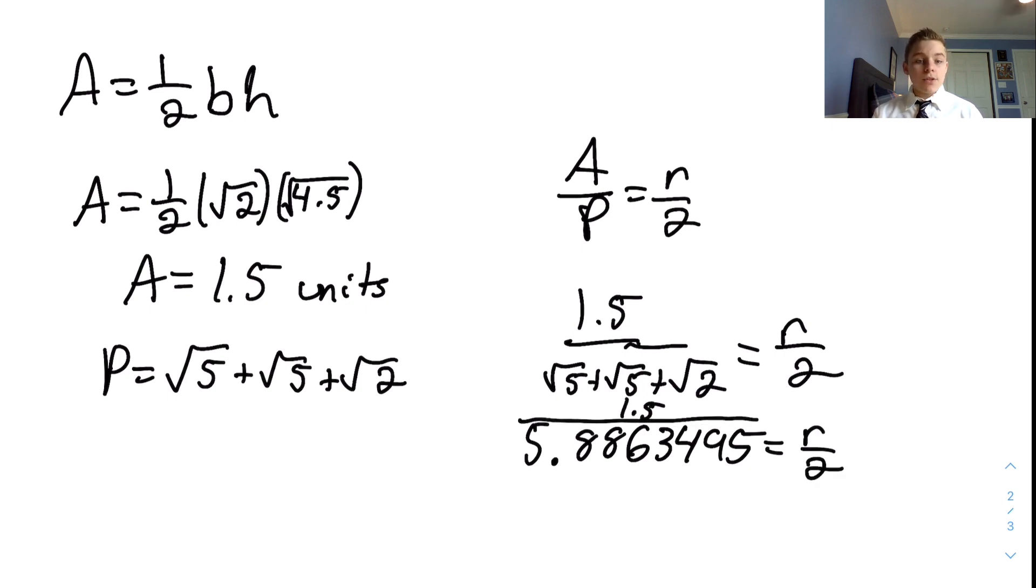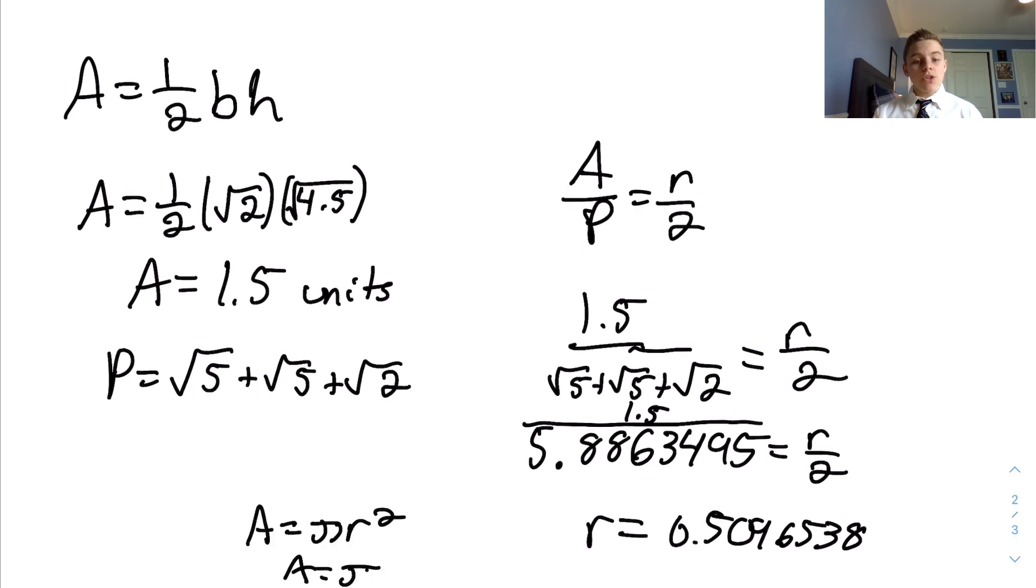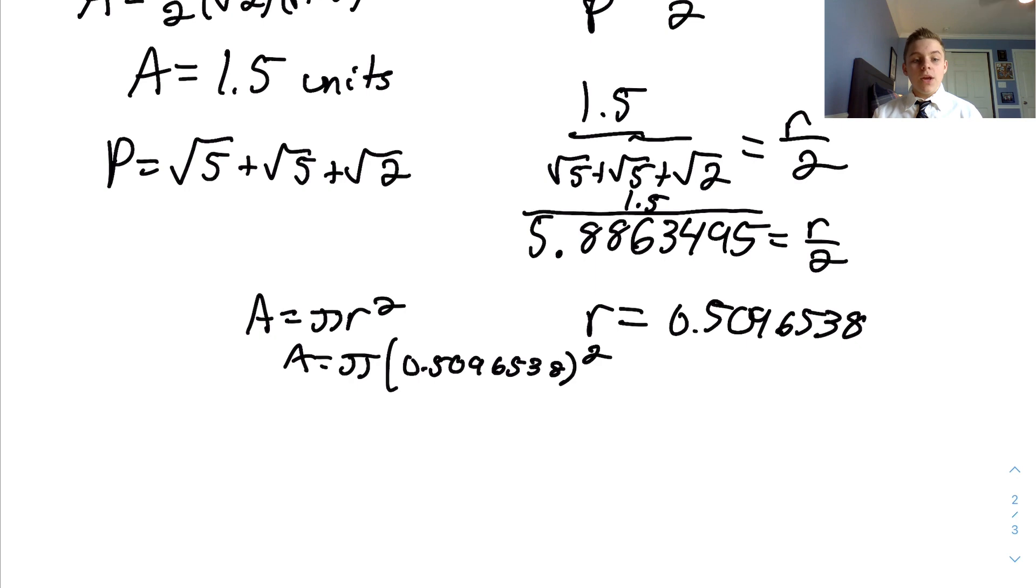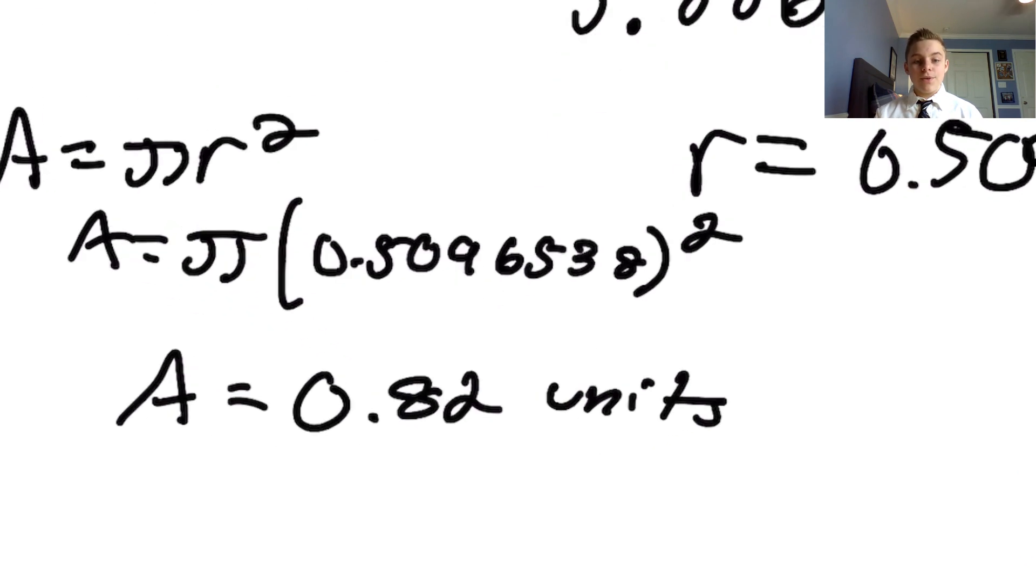After simplifying this by dividing and then multiplying by 2 on both sides, we know the value of the radius is about 0.5096538. When we plug this into our area of the circle equation, solve, and round to the nearest hundredth, our answer is 0.82. So the area of your hot tub is 0.82 units.